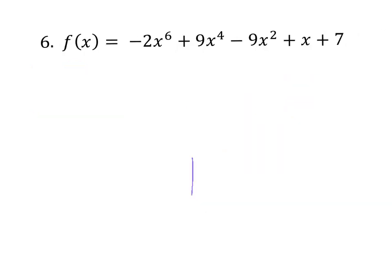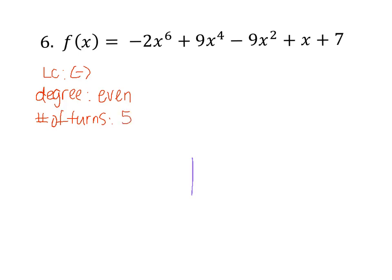I want to work one more example. Let's look at number 6 — at the end of the video I want you to do numbers 5 and 7 on your own and come to class with those done. For number 6, the leading coefficient is negative, the degree is even — so the arrows are going in the same direction — and the number of turns is 1 less than the degree. The degree is 6, so the number of turns is 5.